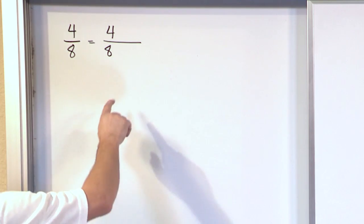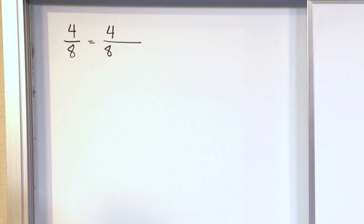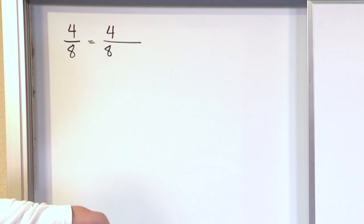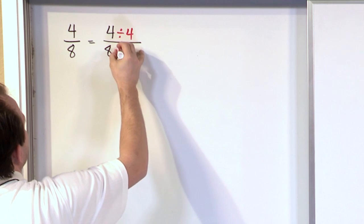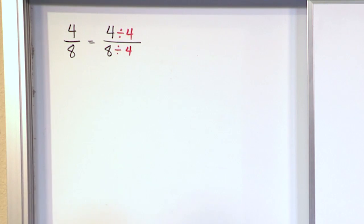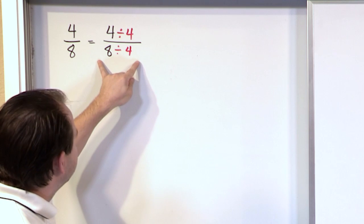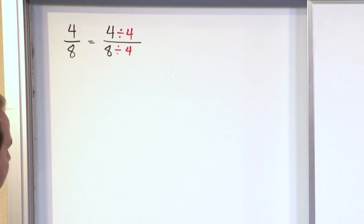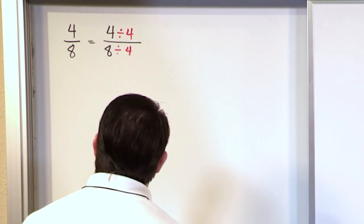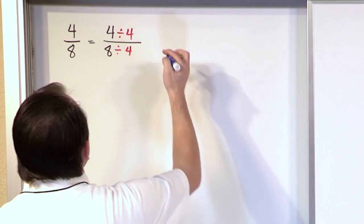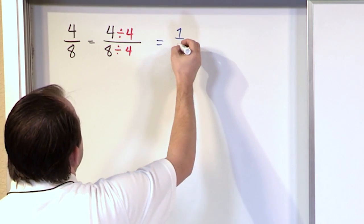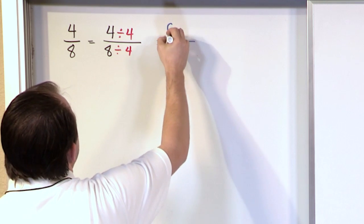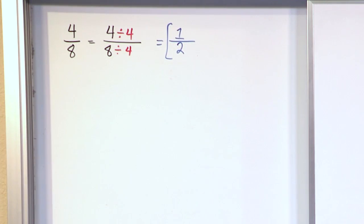So if we have four eighths, is there a number we can divide the top and the bottom by that will divide evenly? Yes — four and eight. We can divide the top by four, and we also divide the bottom by four. As long as we do it to the top and the bottom, it doesn't change what fraction we have, it just changes the way it looks. Four divided by four is one, and eight divided by four is two. So we have one half.